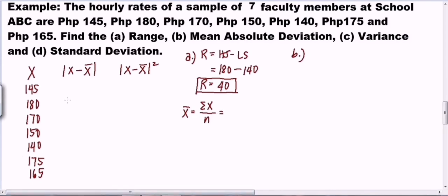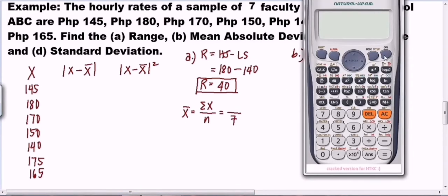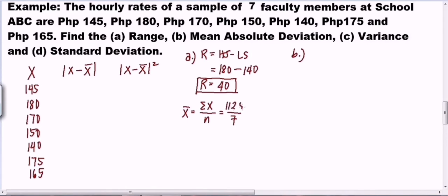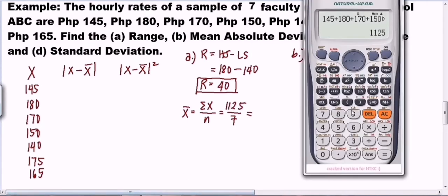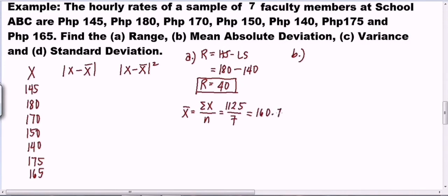Before we compute the table values, we need the mean. The mean for ungrouped data is the summation of X over n — that is, the sum of all scores divided by the number of scores. We have 7 scores, so n = 7. Adding all the X values: 145 + 180 + 170 + 150 + 140 + 175 + 165 = 1,125. Divided by 7, the mean is 160.71.